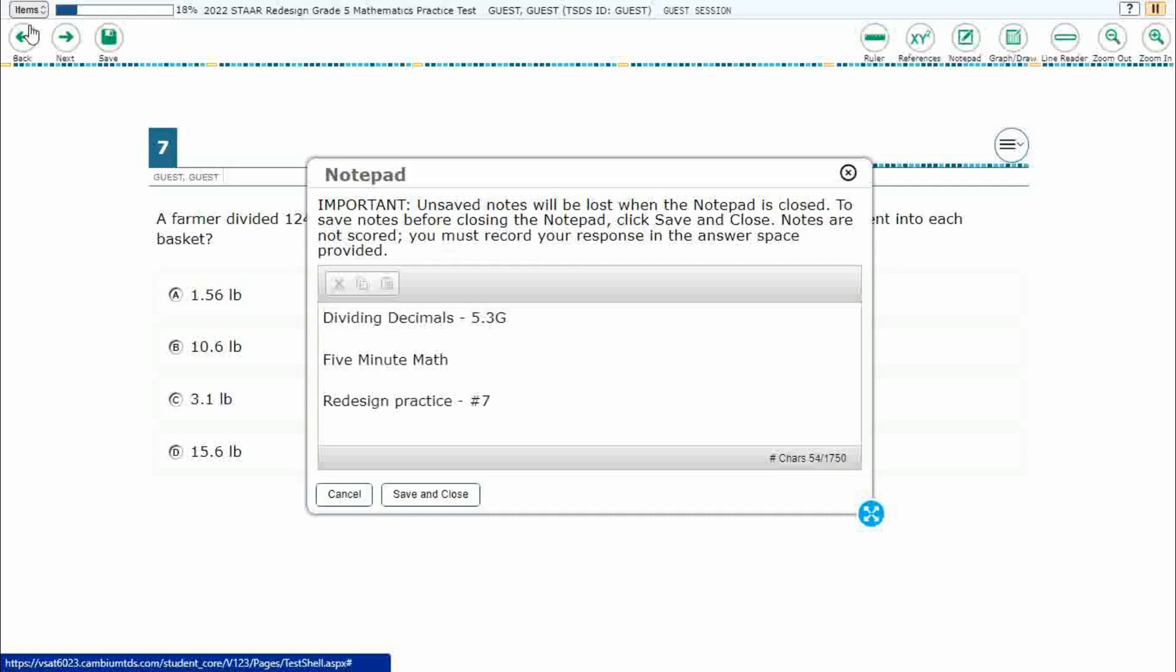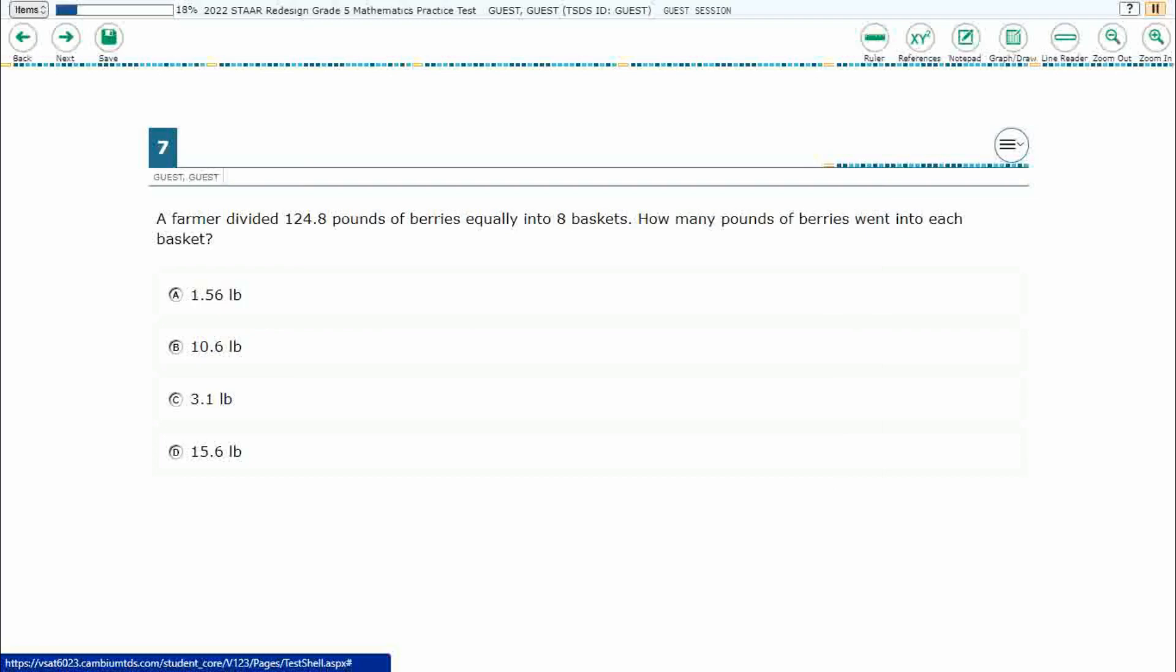Hello and welcome to 5-Minute Math. Today we are looking at the 5th grade concept of dividing decimals. This is standard 5.3G in the great state of Texas, and we are using item number 7 of the Redesign Practice Online Star Test.